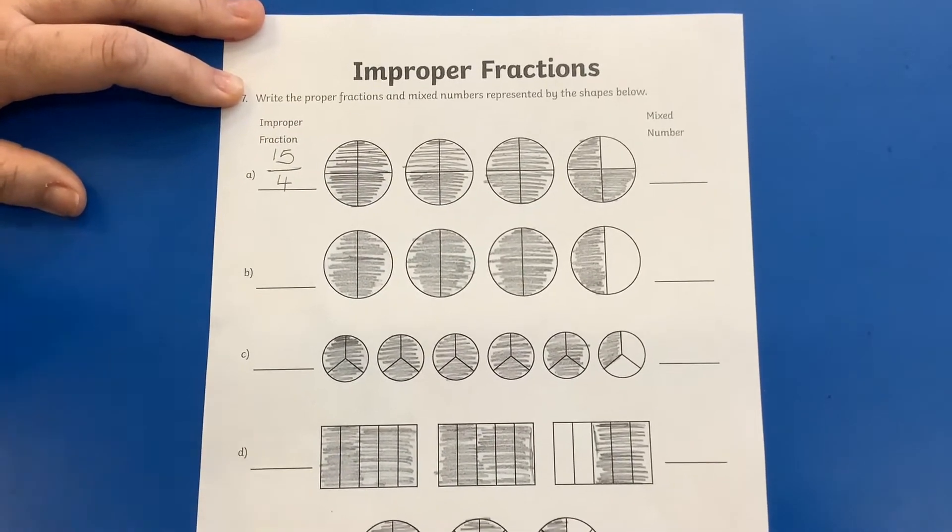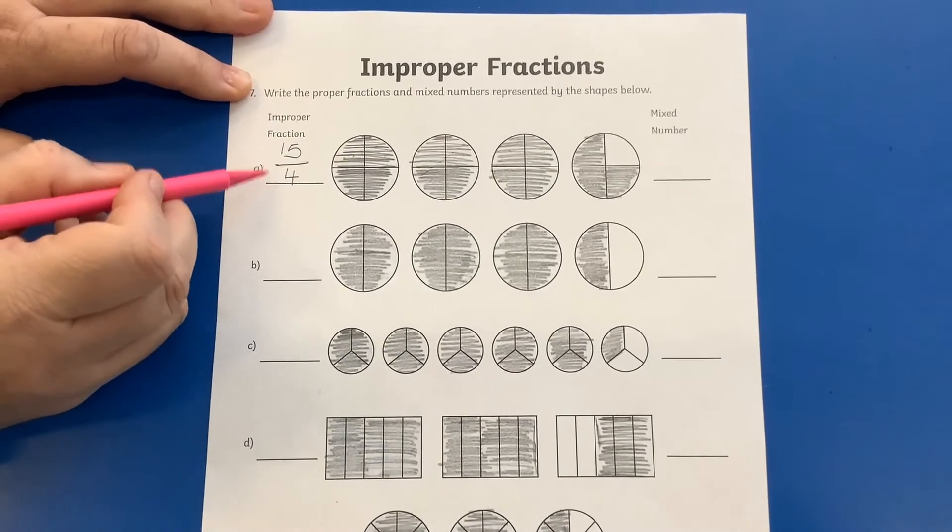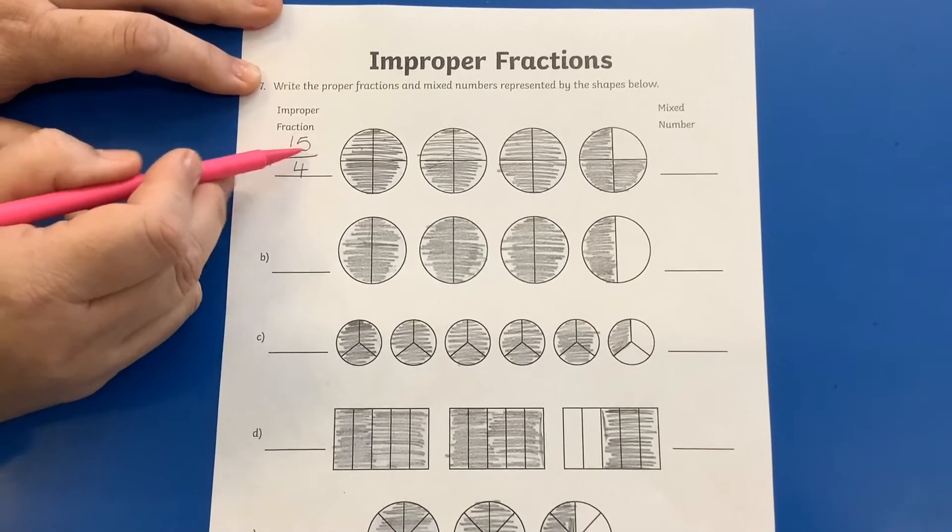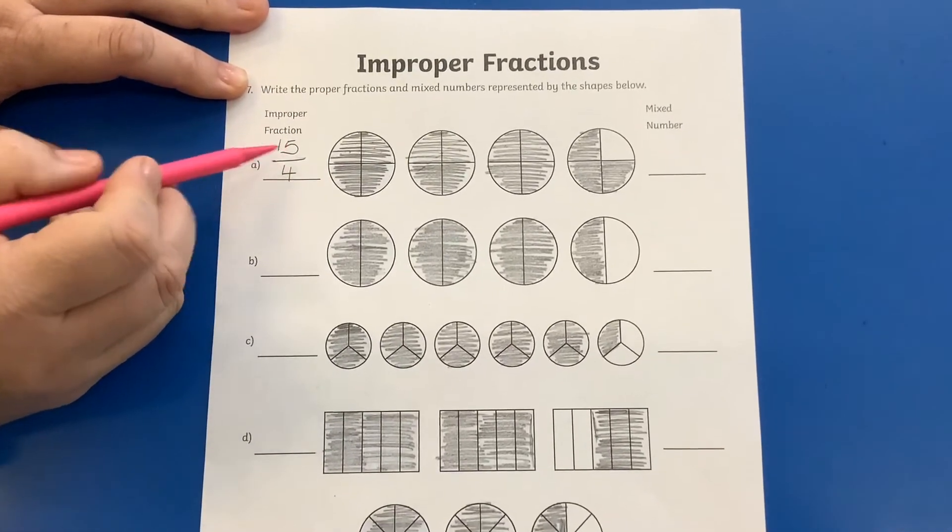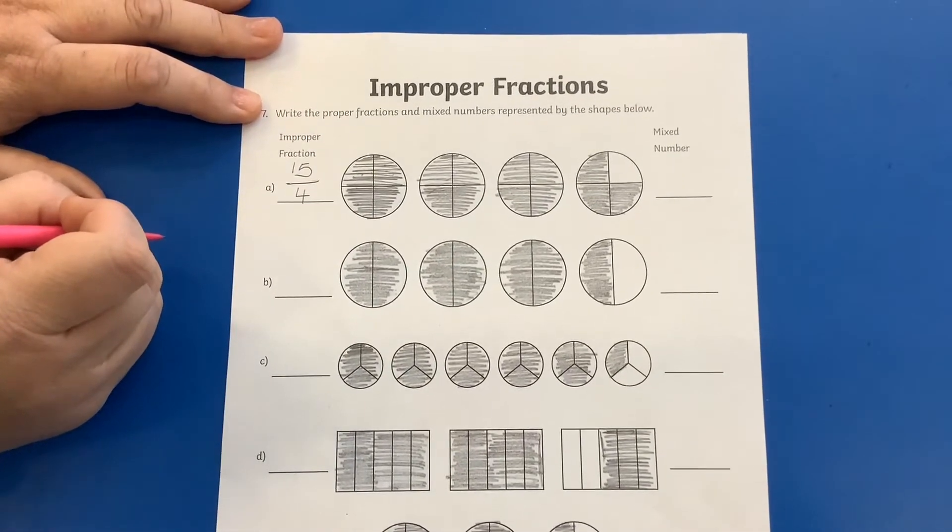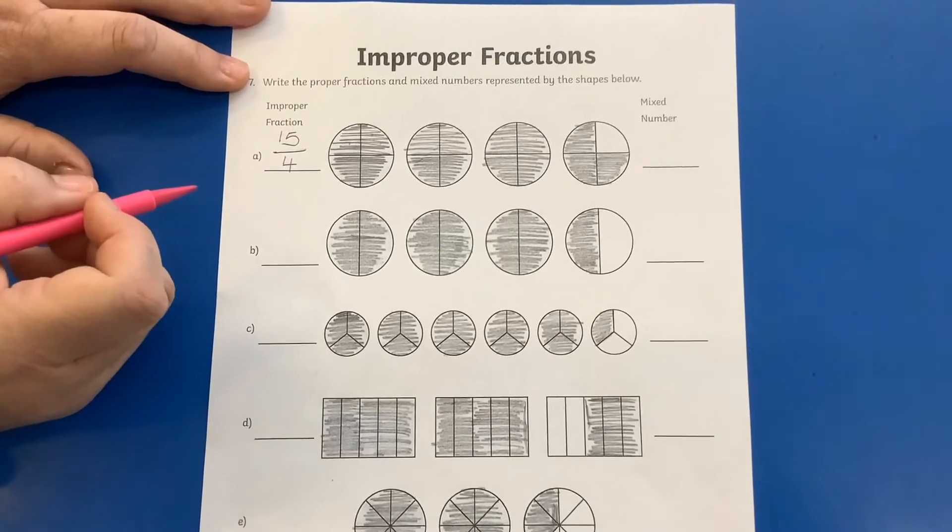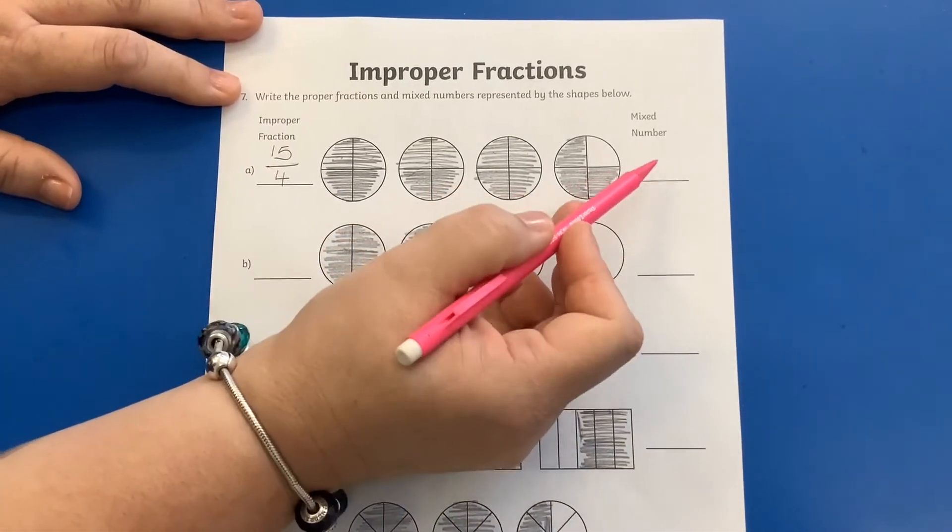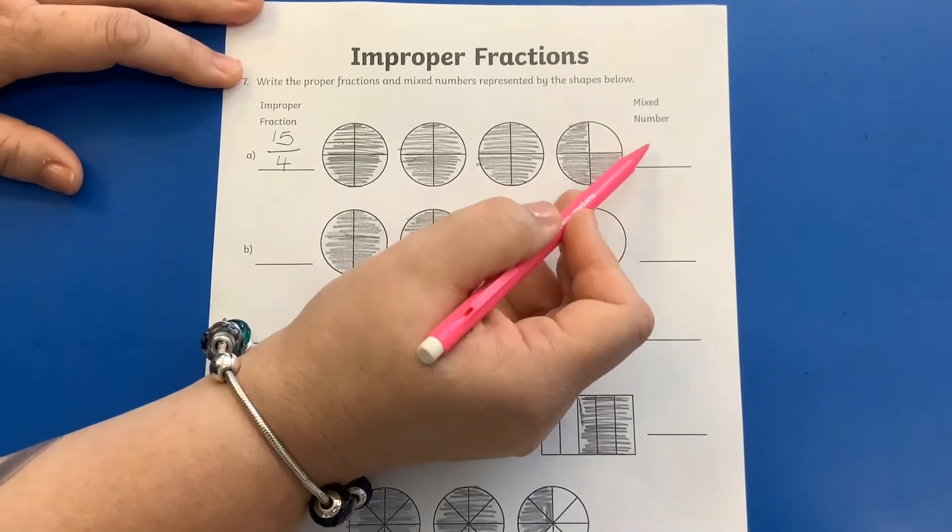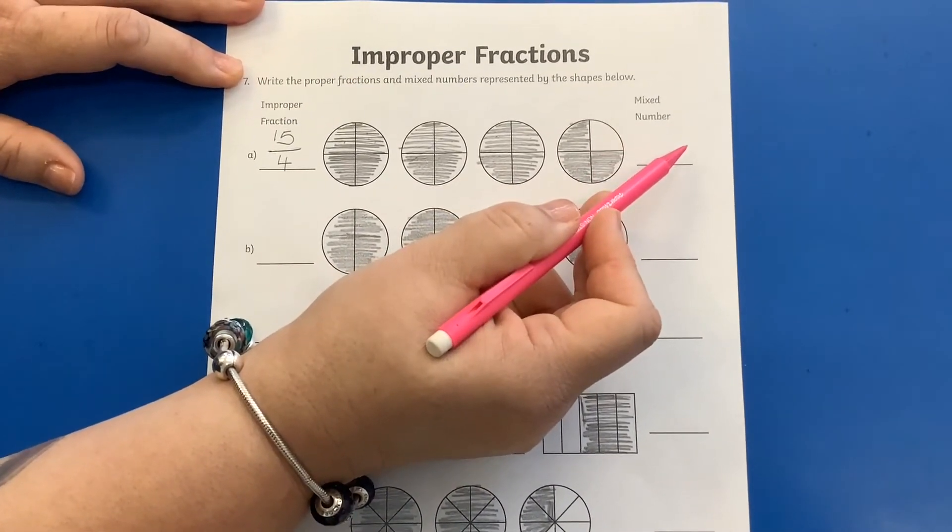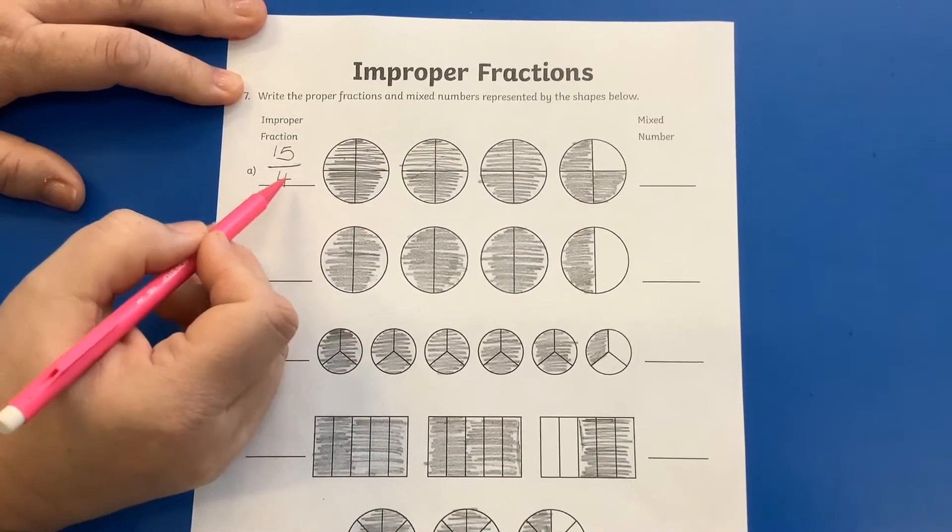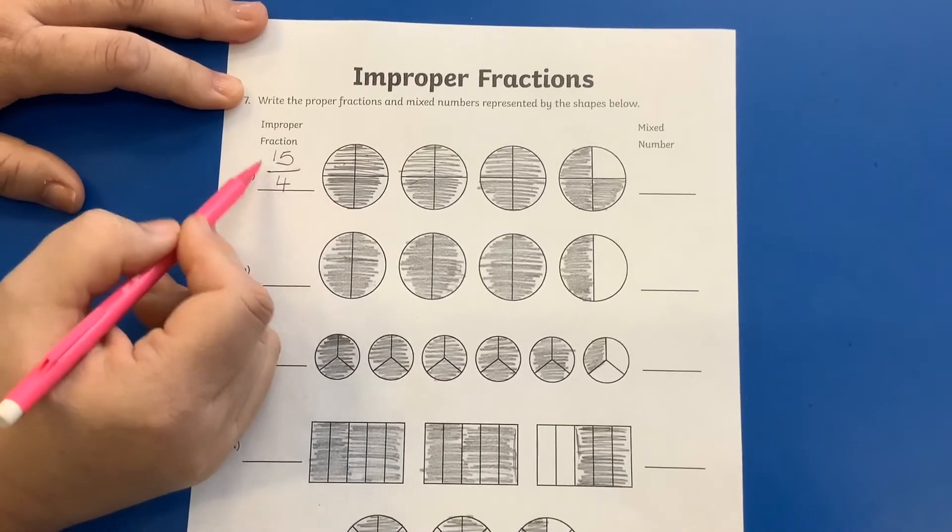Fifteen quarters. And when we look at this, it's an improper fraction, because the number at the top, as I've said, is bigger than the number at the bottom. So my numerator is much bigger. So this is where you need to think about your previous multiplication and division knowledge. Because what we're asking ourselves in order to turn it into a mixed number, a mixed number here just means a whole number with a fraction, is how many groups of four are there in fifteen?